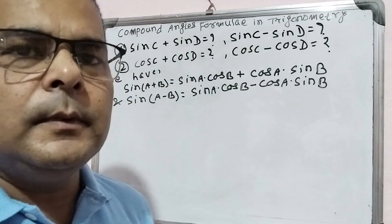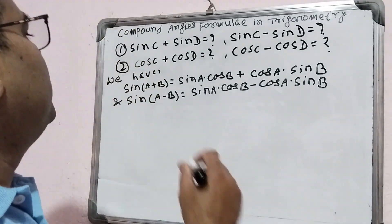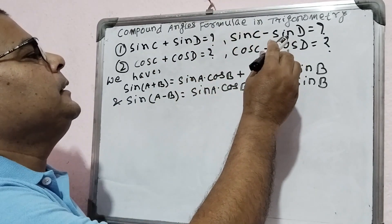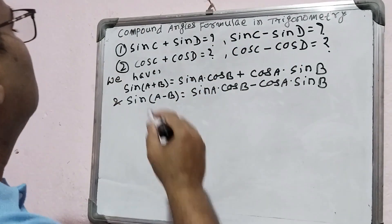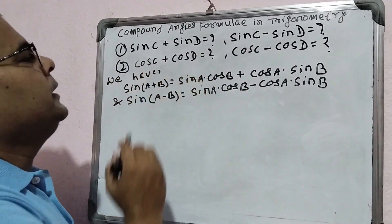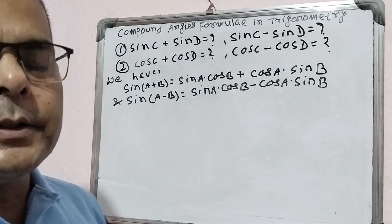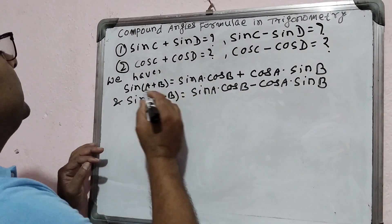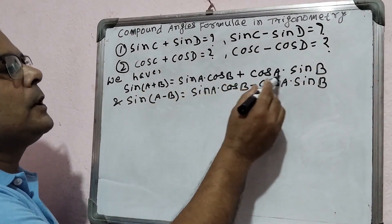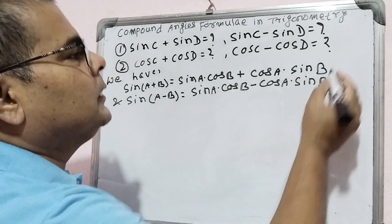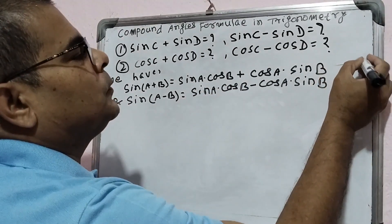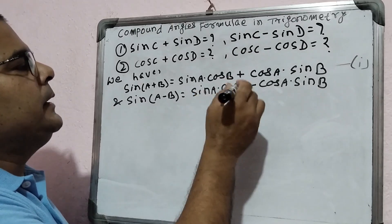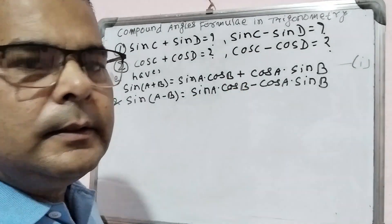Hello everybody. Today I am going to prove the formula for sin C plus sin D, sin C minus sin D, cos C plus cos D, and cos C minus cos D. First, we need to know that sin(A+B) equals sin A cos B plus cos A sin B, and sin(A-B) equals sin A cos B minus cos A sin B.